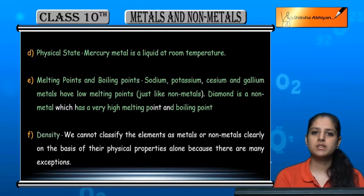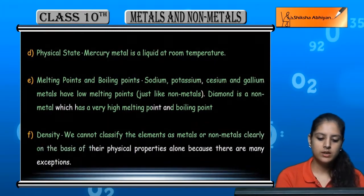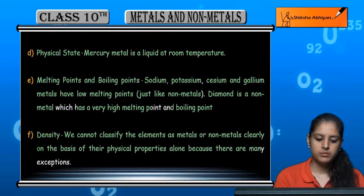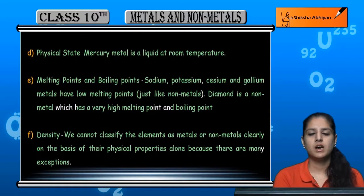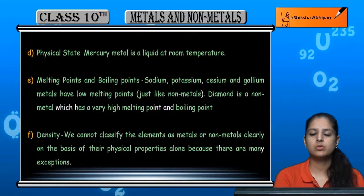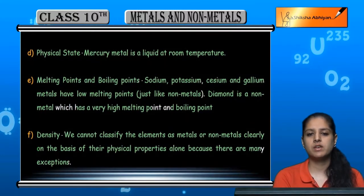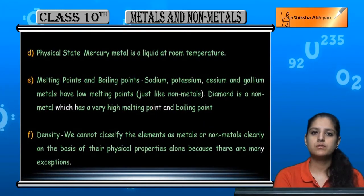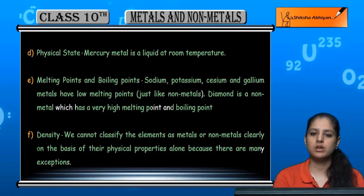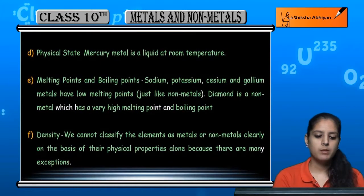Talking about density: metals are heavy and non-metals are light. But we cannot classify elements as metals or non-metals clearly on the basis of their physical properties alone, because there are many exceptions. You cannot say that just because something is light it is a non-metal, or because it is heavy it is a metal. We cannot solely differentiate them on physical properties — some chemical properties are also needed.